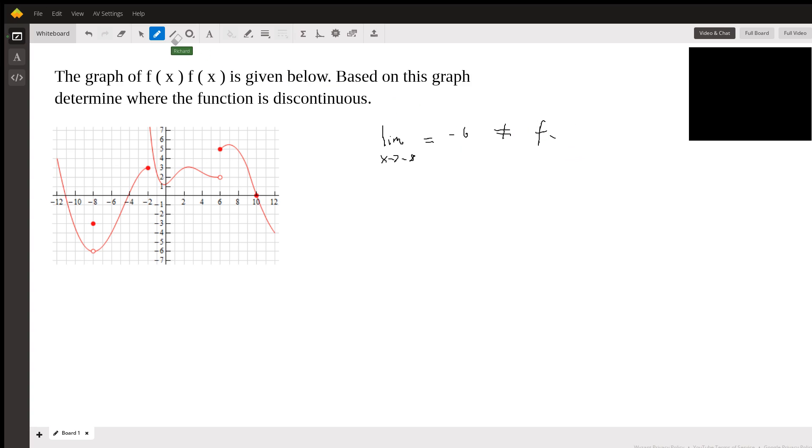Because f of negative eight, you can see when x is negative eight, y is negative three. So this is the first point of discontinuity as we're moving from left to right. The limit as x approaches negative eight is negative six and that's not the same as f of negative eight, which is negative three.